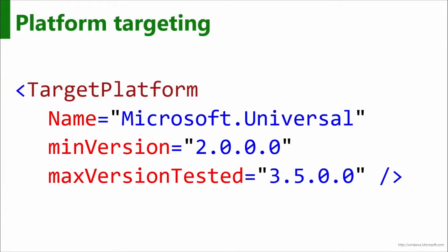Here's the manifest syntax for targeting the platform. You target Microsoft Universal and specify two things. If you're an Android developer, something like this is quite familiar. You can say the minimum version — typically the version the app was written on, let's say 2.0. Then you can say the max version tested — let's say you've run it on 3.5 and double-checked all your workflow and the application still works. So anywhere between 2.0 and 3.5 the store will run your application. The max version tested is your guarantee to customers; it doesn't mean it won't work on version 4 or 5 of the UAP when they come along.